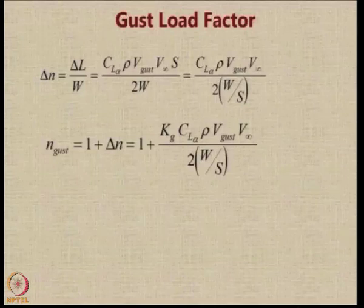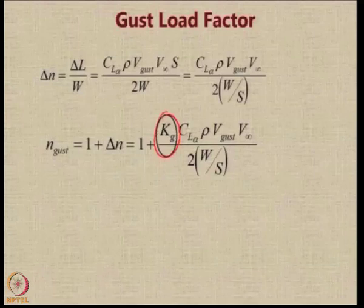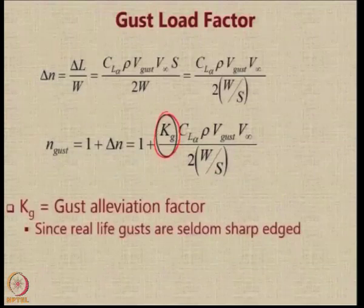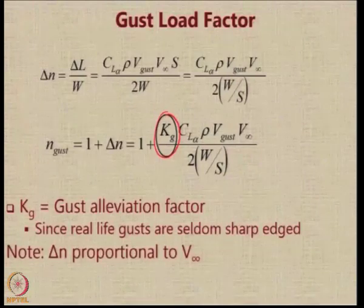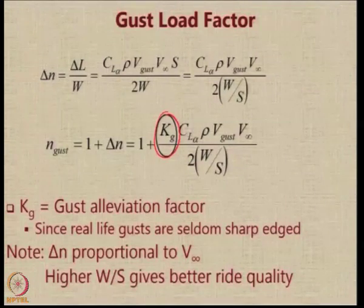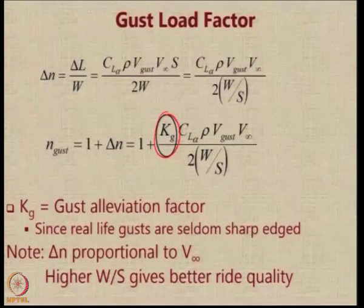The total load factor acting because of the gust is the summation of the load factor in level flight, which is 1, plus delta N, and there is a factor called kg. This kg factor is meant to take care of the fact that real-life gusts are seldom sharp-edged — they have some kind of variation. As mentioned, higher W/S gives better ride quality. So if you have a low-speed aircraft with a very high wing loading, the delta N experienced for a given gust velocity is going to be lower.